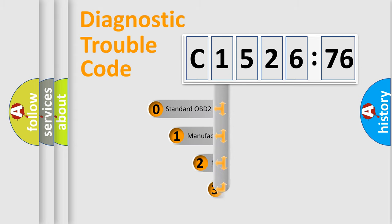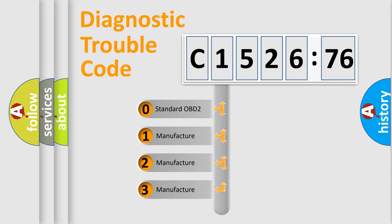Powertrain, Body, Chassis, Network. This distribution is defined in the first character code.